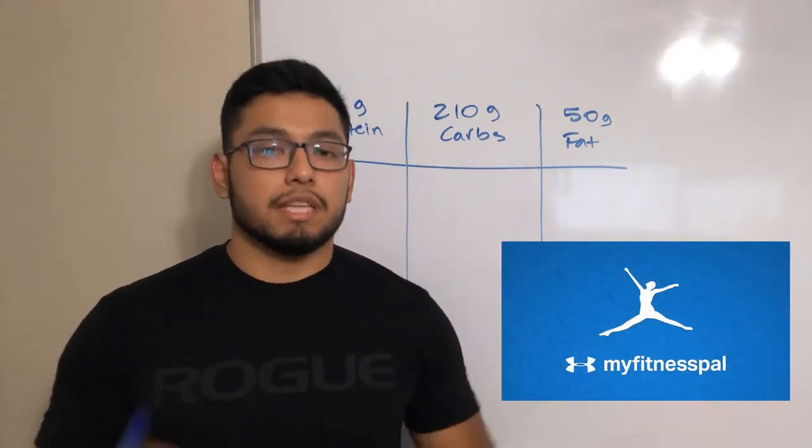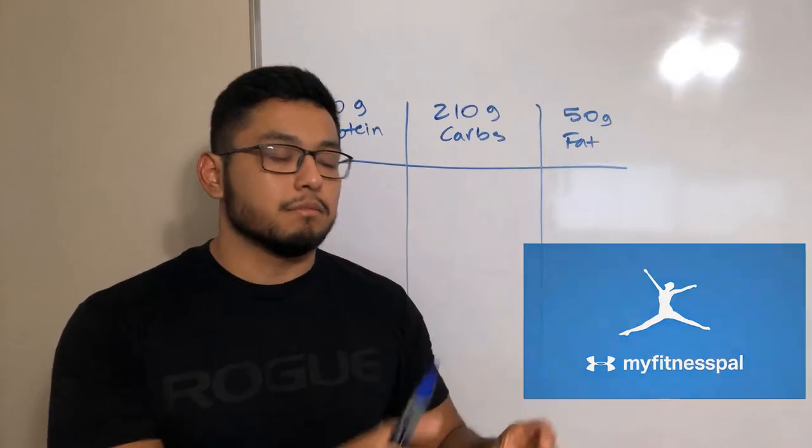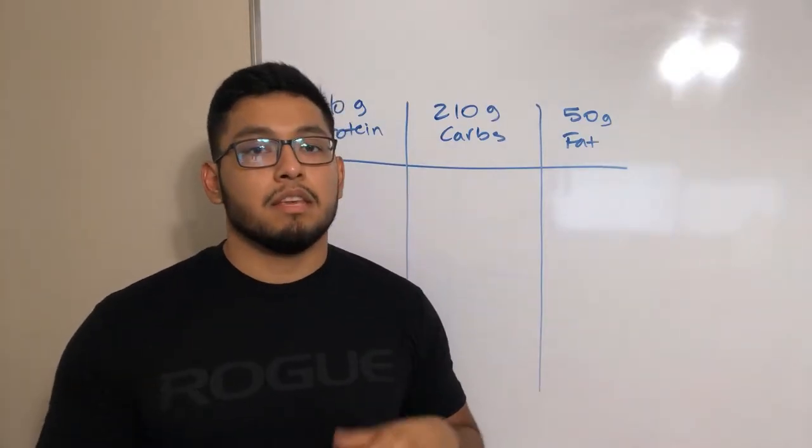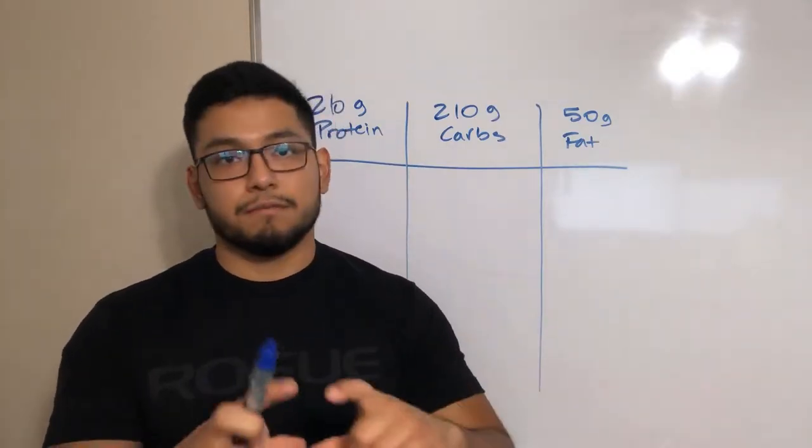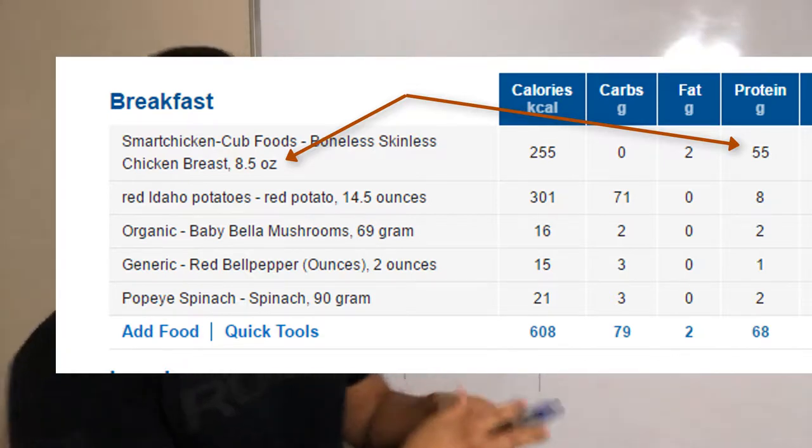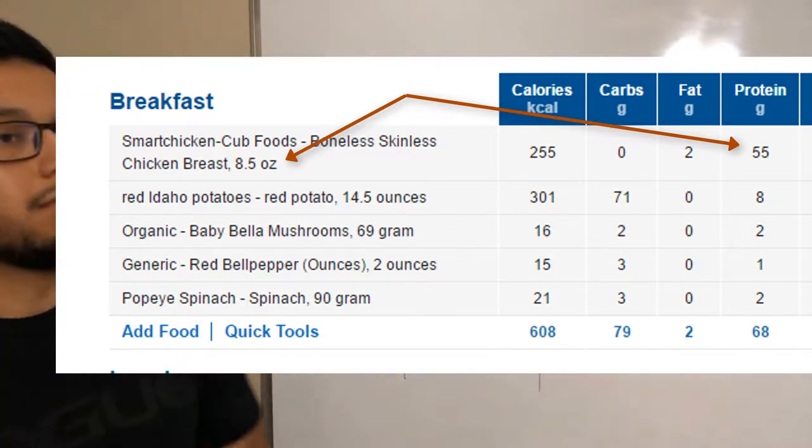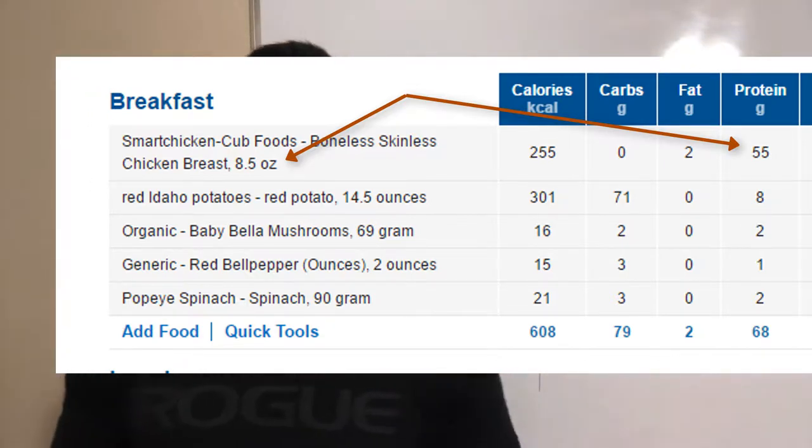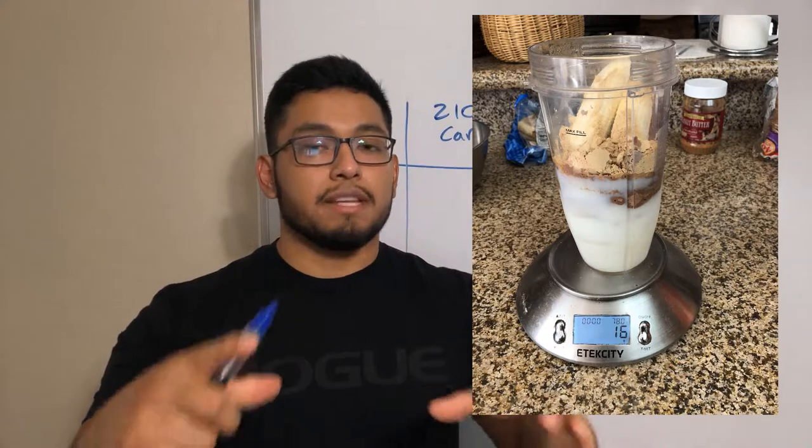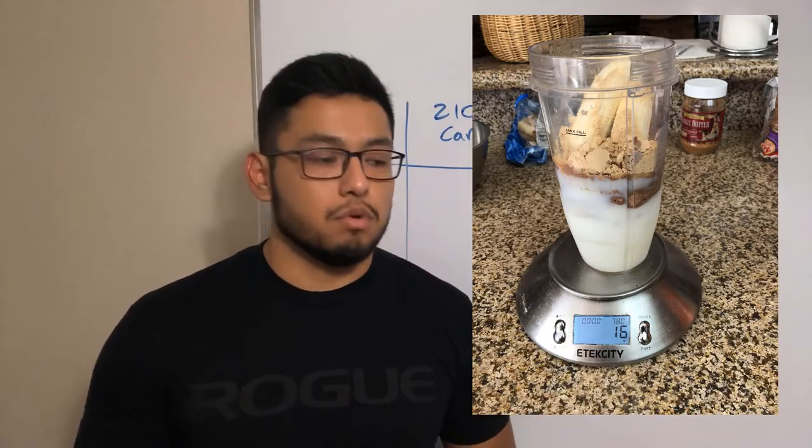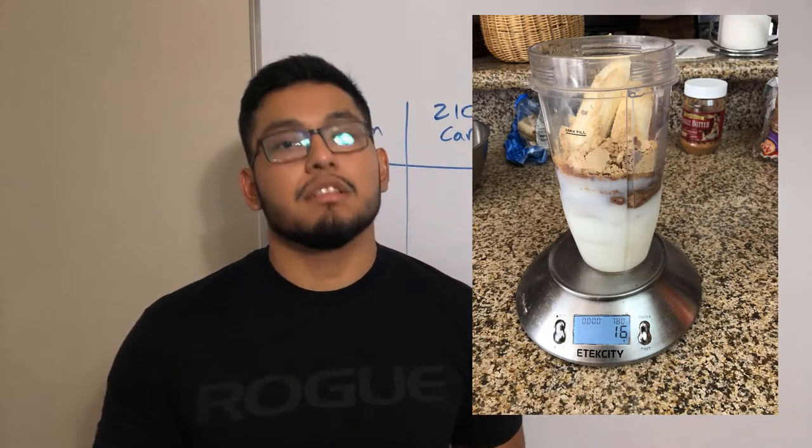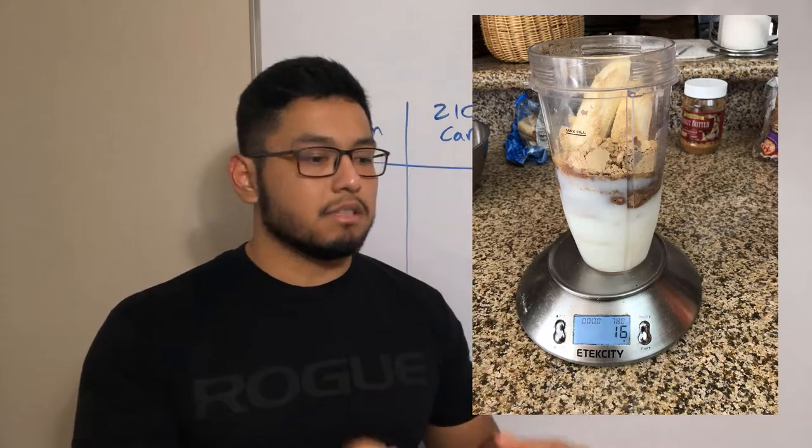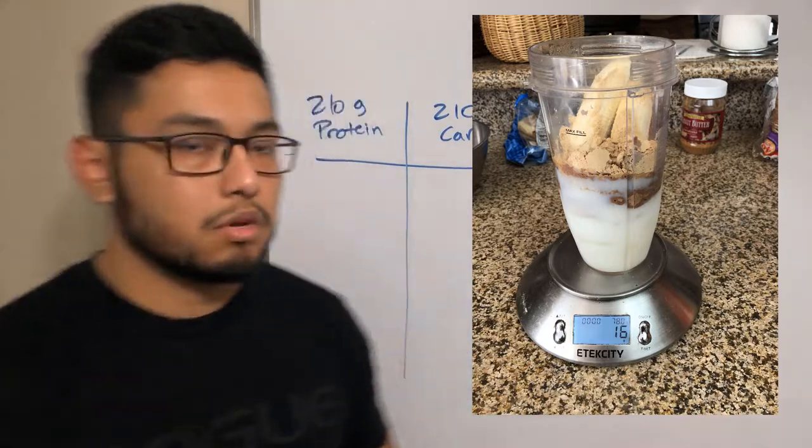MyFitnessPal allows you to scan barcodes of food items. And then it'll say okay, four ounces of chicken has this amount of protein. It'll say eight ounces of chicken breast has 52 grams of protein. How do you know how much eight ounces is? Well, that's why you buy a weight scale, a food scale, where you put the chicken on it and it says eight ounces.